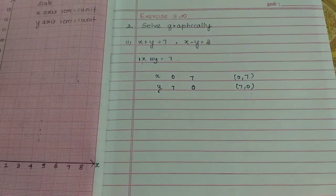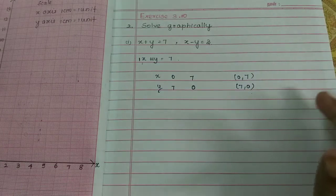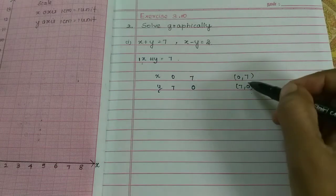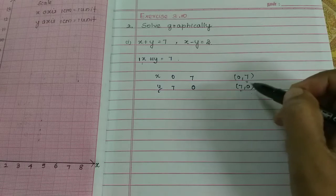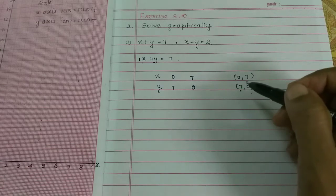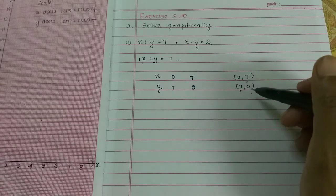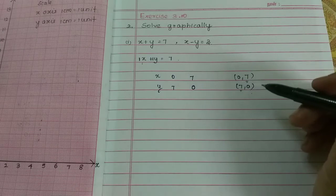We have 2 points. The points are (0, 7) and (7, 0). The maximum y-axis value is 7 and x-axis value is 7. So in this scale, x-axis is 1 cm equals 1 unit, and y-axis is 1 cm equals 1 unit.